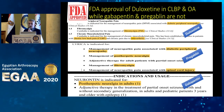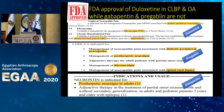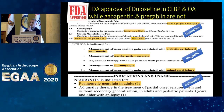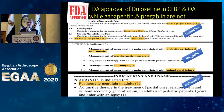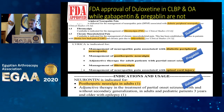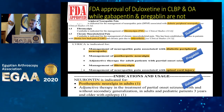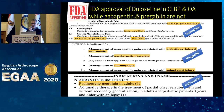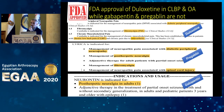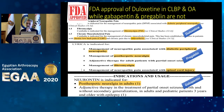Duloxetine is recommended and approved by the FDA for three groups of patients: patients with osteoarthritis, patients with low back pain, and patients with neuropathic pain or peripheral neuropathy. In comparison, its competitors — pregabalin and gabapentin — can only be used in patients with peripheral neuropathy and are not recommended for patients with low back pain and osteoarthritis like duloxetine.